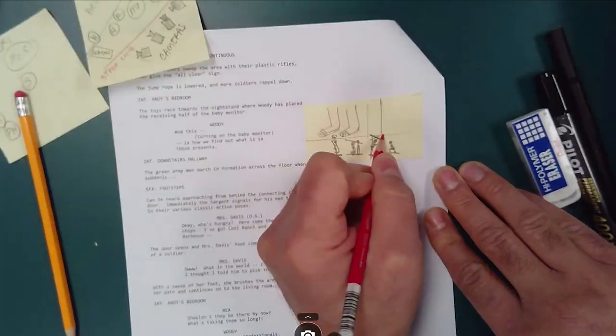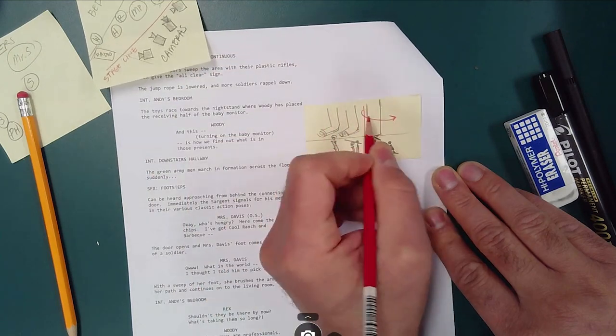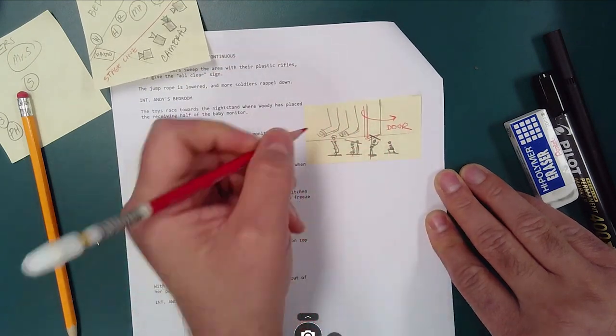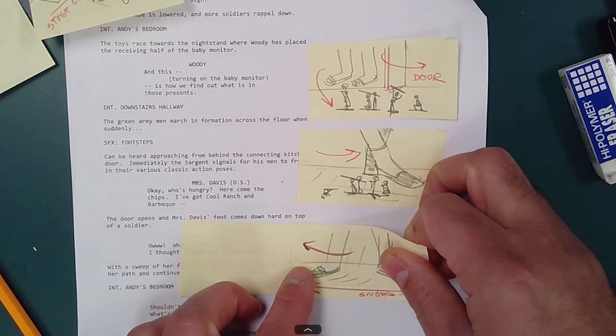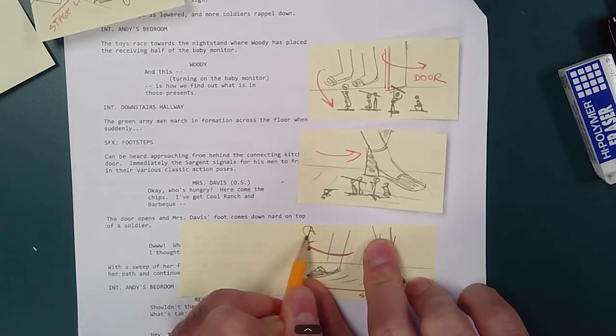Right here I'll use some arrows to help suggest action. I like to use the red pencil or markers because it's easy to see what's happening and it differentiates it from the pencil.